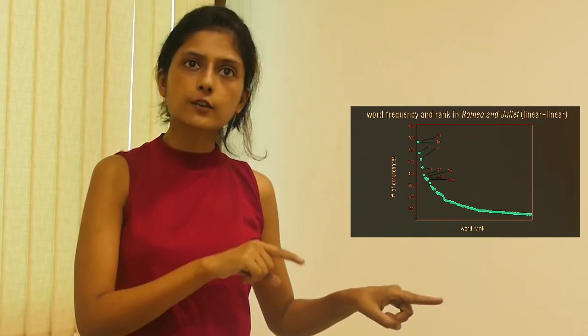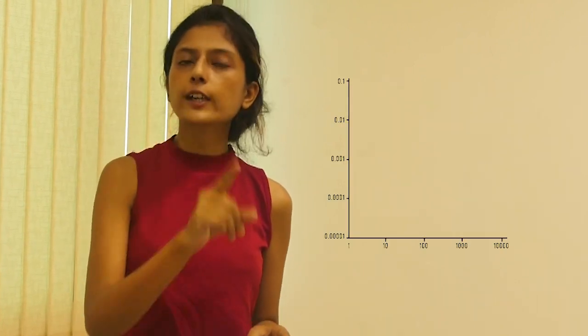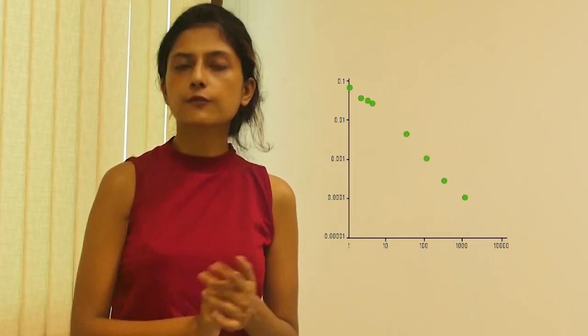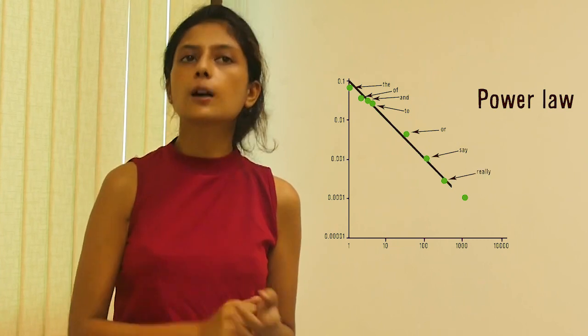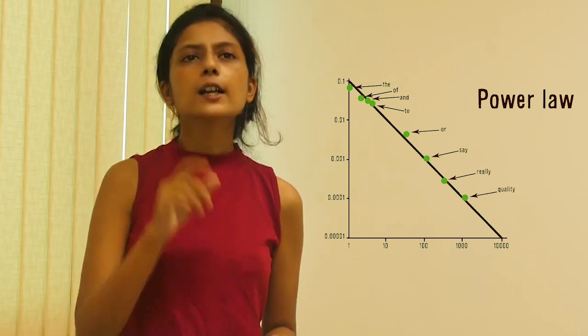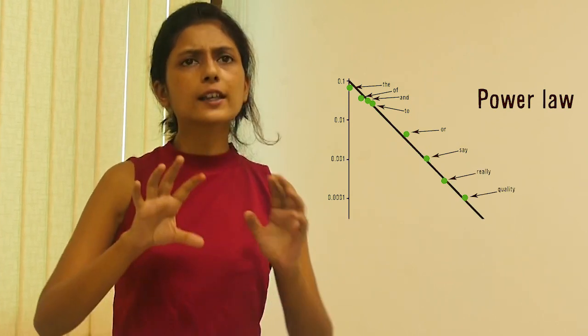Accordingly, they are ranked as one, two, three, and so on. If you re-plot this graph on a log-log scale, you get a straight line with a negative slope. This is called a power law. Zipf's law is a special case of power laws, where the slope of this line is found to be minus one, and it is constant for all human languages.